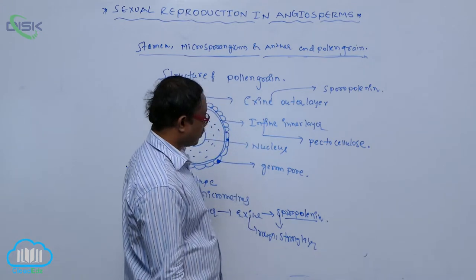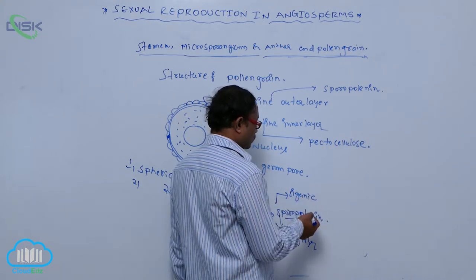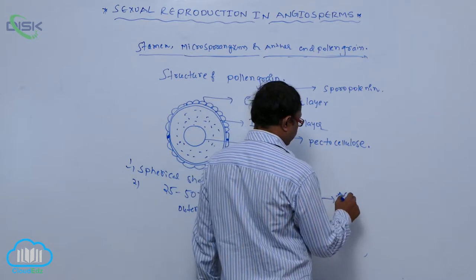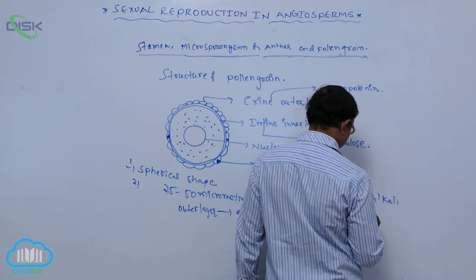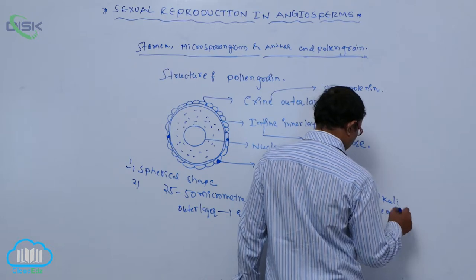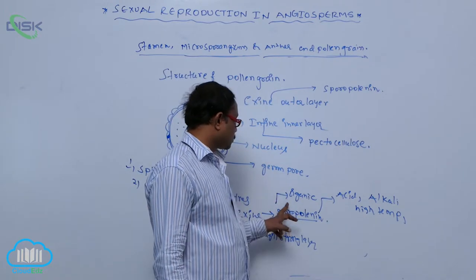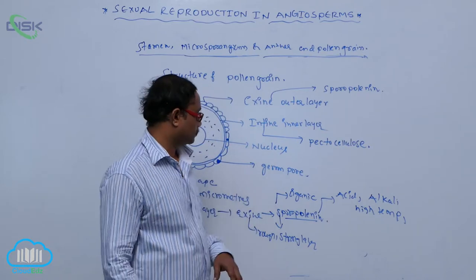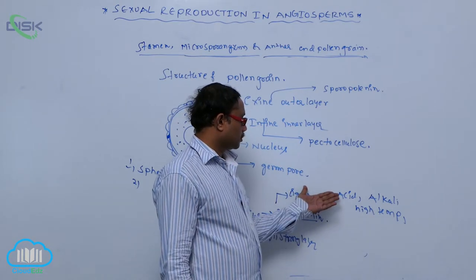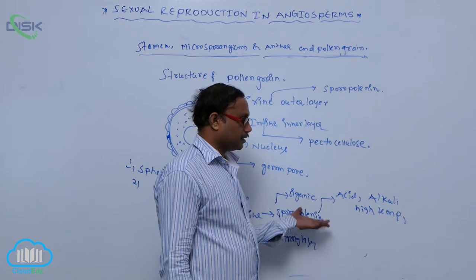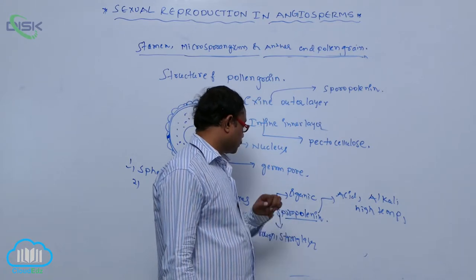Sporopollenin is an organic material. It does not dissolve in acid, alkali substances, or at high temperatures. No enzyme is known for dissolving sporopollenin. It is a very strong organic substance — resistant to all these conditions.